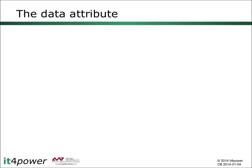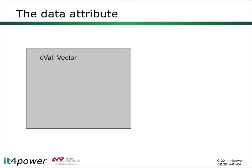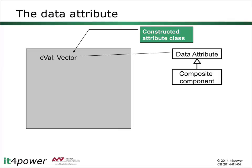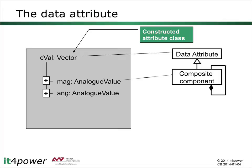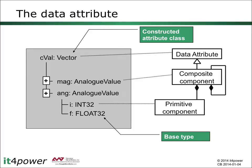A data attribute may have, in principle, an unlimited number of hierarchical structure levels. For example, we have a constructed attribute class of type vector, which can be a type from a theta attribute — in that case, Sival. This is a composite component where we find two elements: magnitude and angle, which is again of a type analog value, which is again a constructed attribute class. Beyond that, we may find primitive components like I or F for an integer or floating-point representation of the analog value. In principle, we may have multiple hierarchical levels beyond a data attribute until we get to a basic type like integer 32 or floating-point 32.